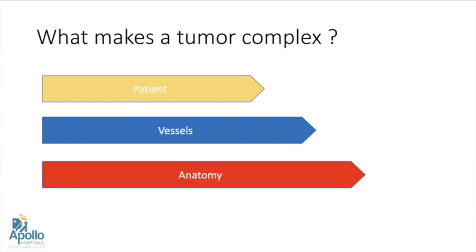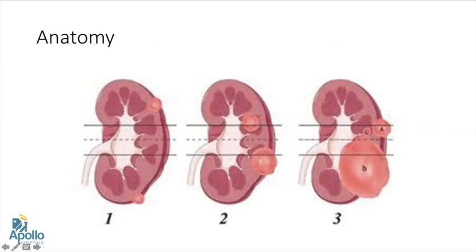Today we'll be discussing more about the anatomical factor which makes a tumor complex. Tumors lying on the surface of the kidney or which are exophytic and polar are comparatively much easier to do, as compared to tumors which are quite big and closely related to the PCS system or to the hilum. Endophytic tumors again pose a difficult surgical challenge.